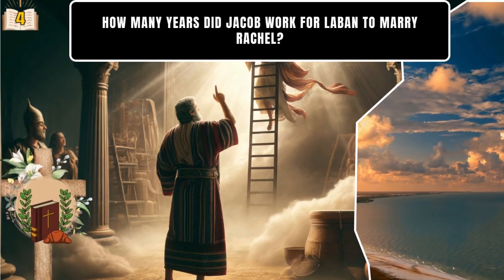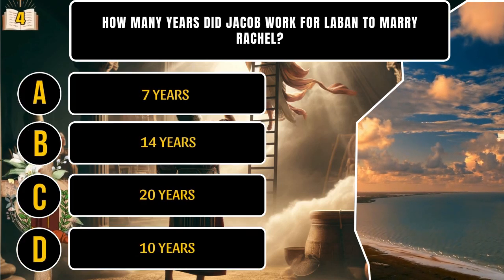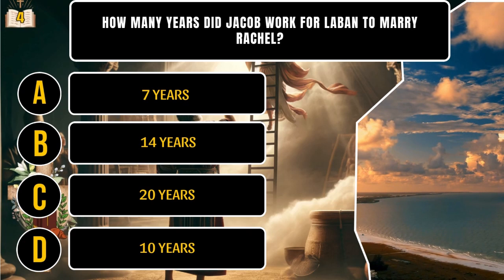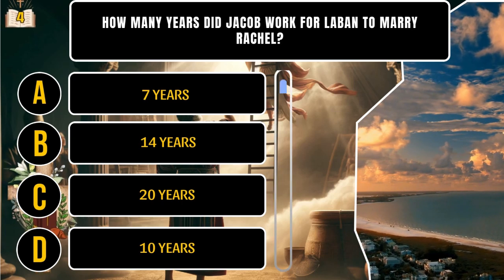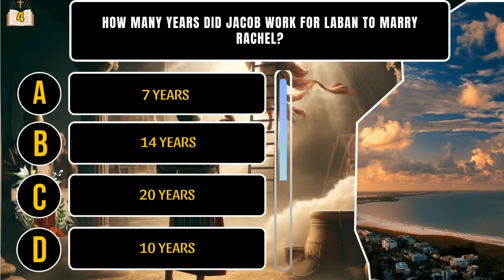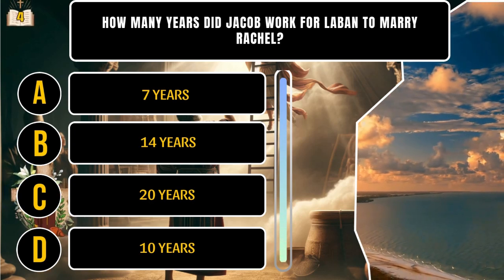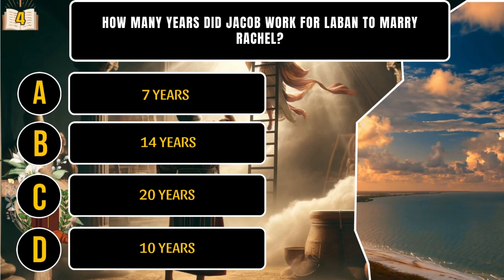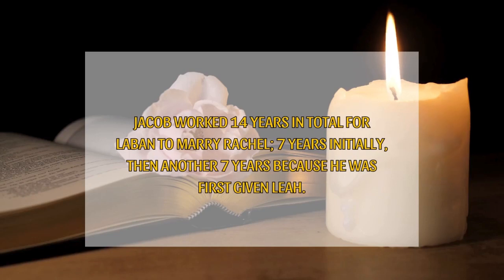How many years did Jacob work for Laban to marry Rachel? A. Seven years. B. Fourteen years. C. Twenty years. D. Ten years. That's B. Jacob worked fourteen years in total for Laban to marry Rachel — seven years initially, then another seven years because he was first given Leah.